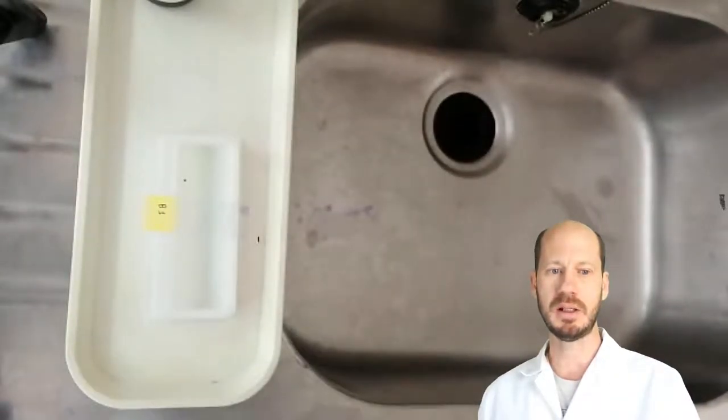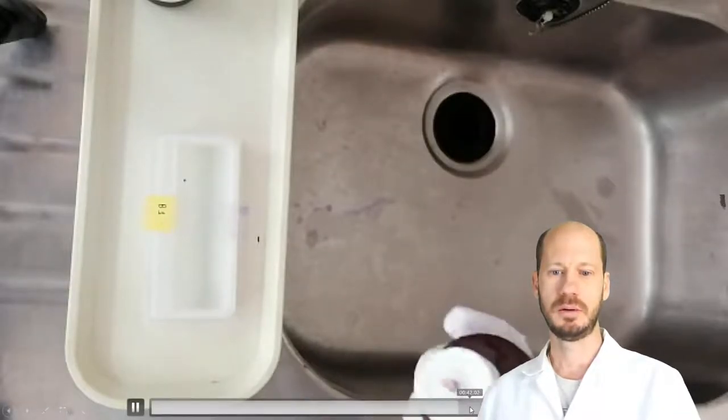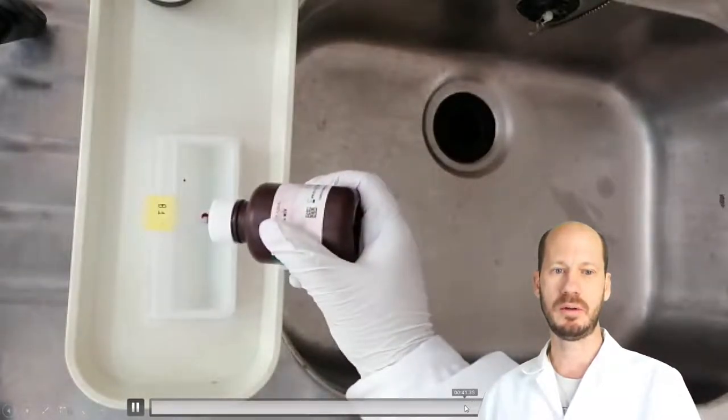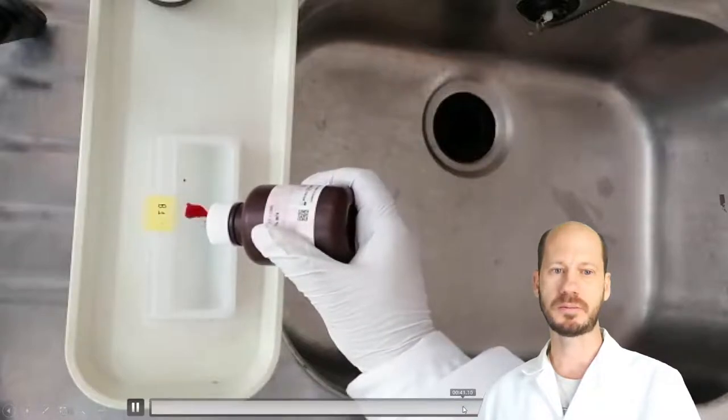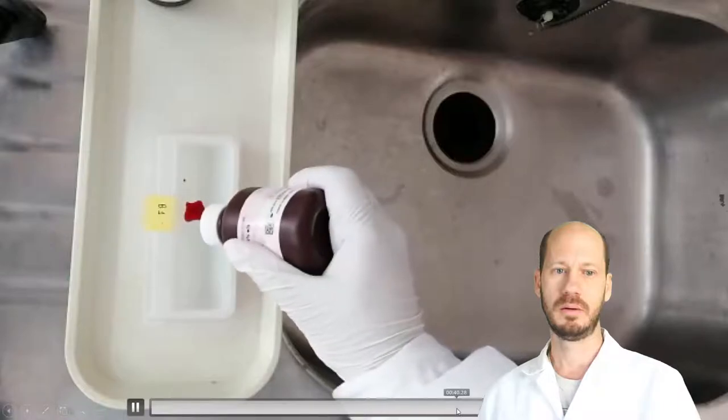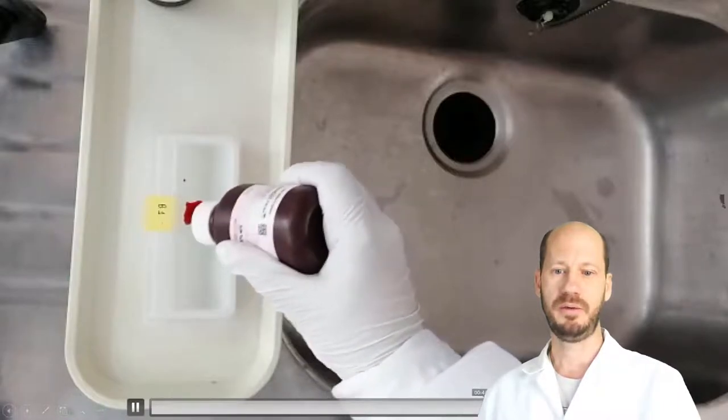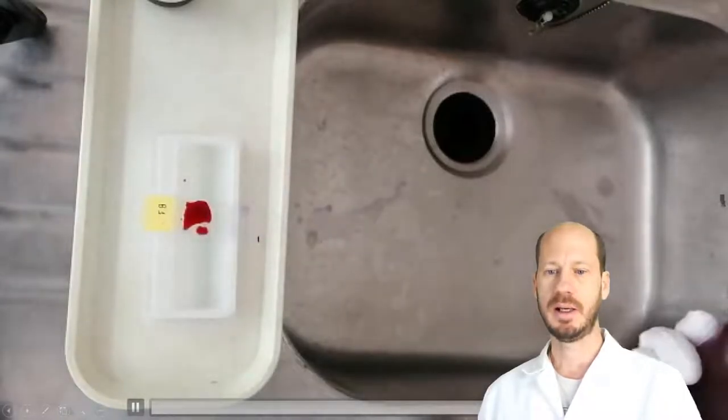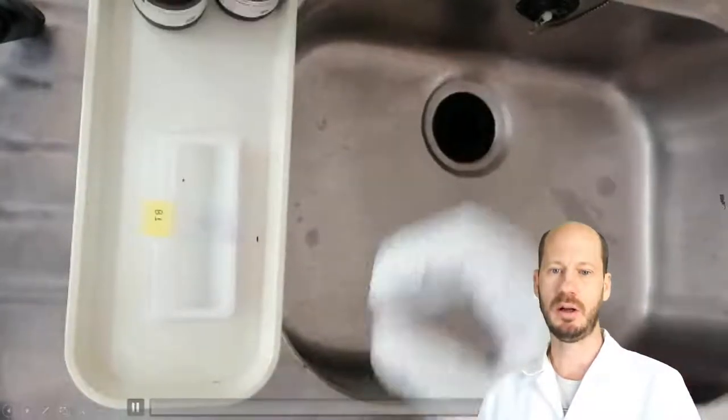The counter stain step is with safranine, which is shown now. A couple of drops of safranine over where the cells were. Leave it for a few minutes and then we can remove the safranine, the excess of safranine, and we can look at it on the microscope.